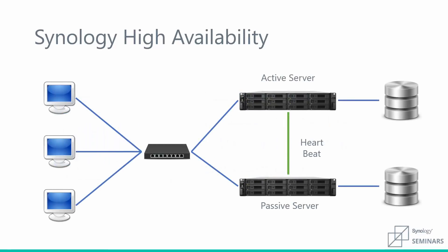Here's an overview of our environment. On the left we have all of the PCs. In the middle that network switch represents our network. You can see our active and passive server on the right connected by that heartbeat connection, and on the far right those cylinders represent the hard drives on those machines. When someone uploads data to the server, we can see it pass through the network to the active server. As soon as it gets there, a copy of that data is made and sent to the passive server and its hard drives. Once that's completed, an acknowledgement is sent all the way back to that original PC, letting it know that the data has been uploaded successfully.